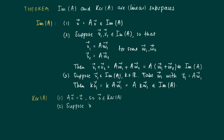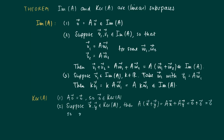Now suppose we have two vectors x and y in the kernel of matrix A, so that A times x equals 0 and A times y equals 0. Then the sum A times (x plus y) equals A times x plus A times y, which equals the zero vector plus the zero vector, equals the zero vector. So this shows that x plus y is also contained in the kernel of matrix A.